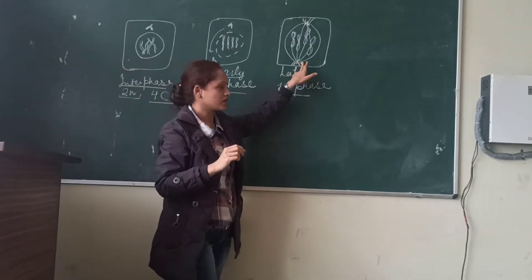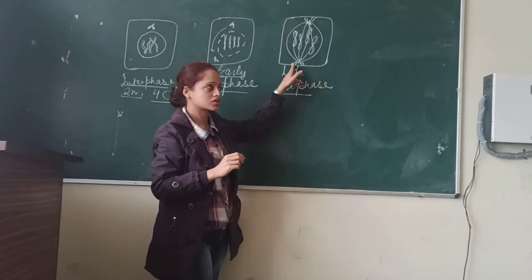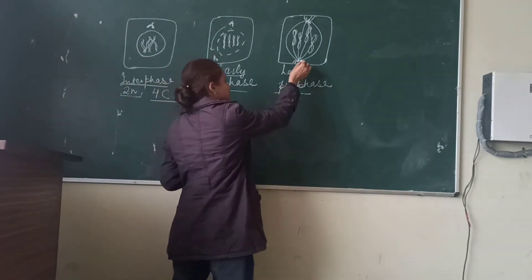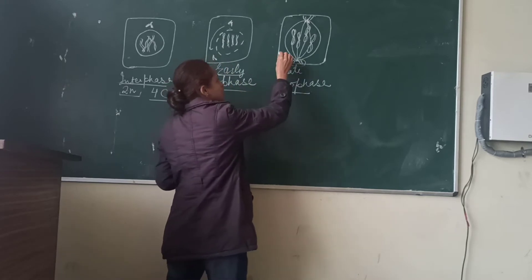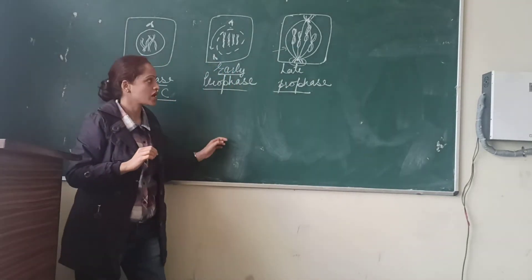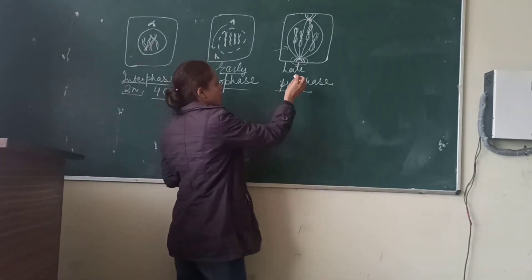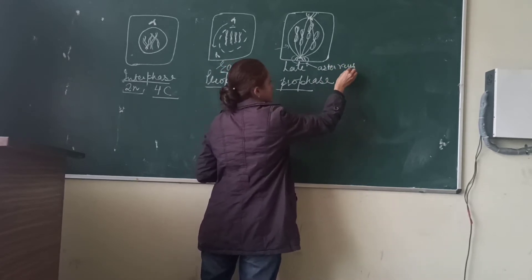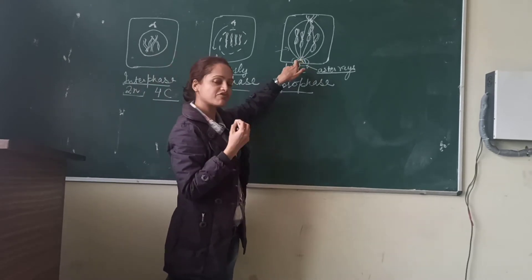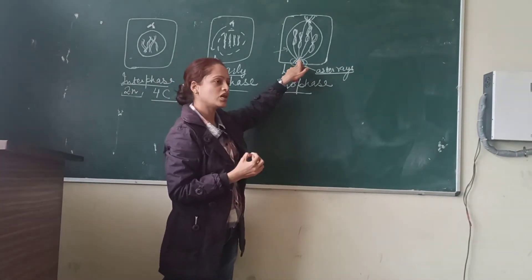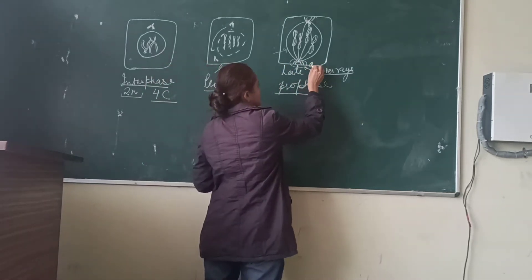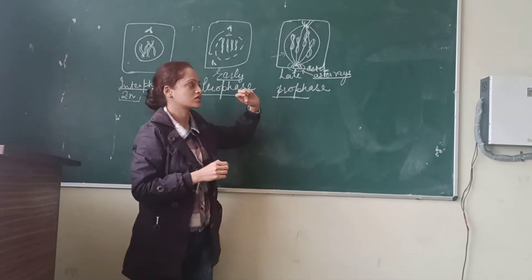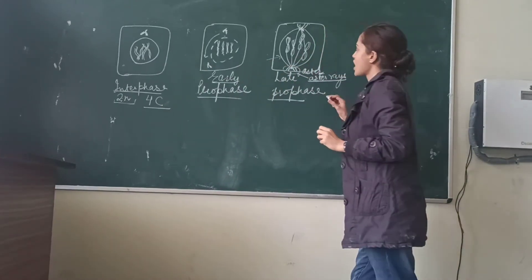Spindle fibers radiate out from the centrioles. Two kinds of spindle fibers form from the centrioles: smaller spindle fibers and larger spindle fibers. The smaller spindle fibers are known as asters, and the smaller spindle fibers along with the centriole are together known as an aster. The larger spindle fibers are of two types.